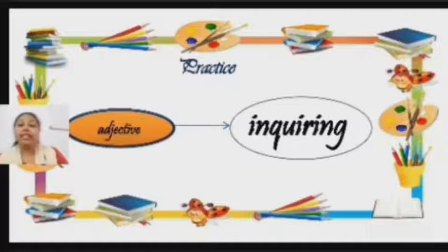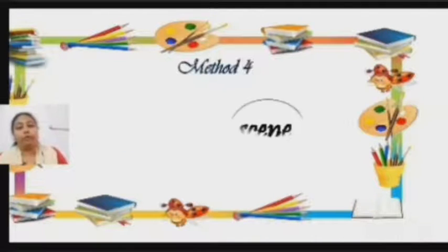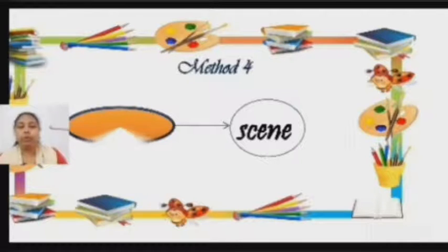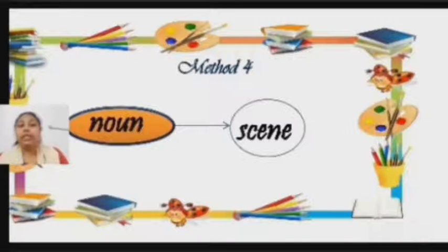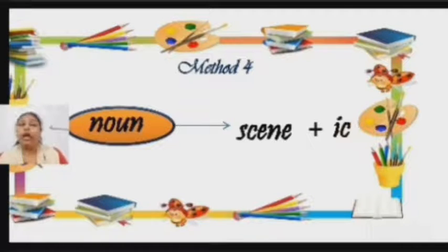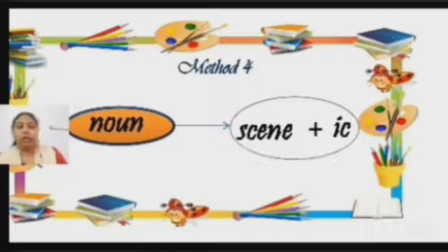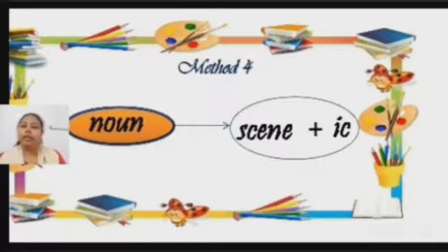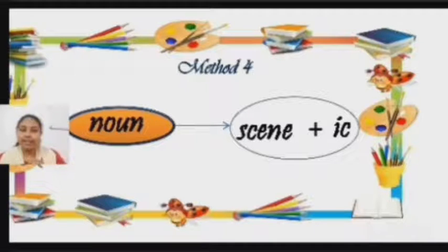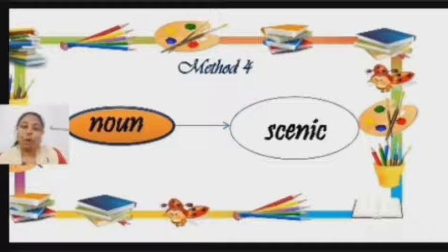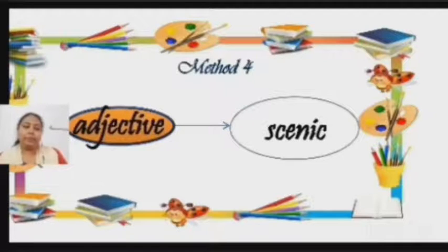So let's move and see the fourth method of changing a noun into an adjective. The word is 'scene'. I am going to add to this word '-ic'. You need to remember one more thing: whenever 'e' comes at the end of a word, 'e' is a very shy vowel — it hides. So the new word formed is written as S-C-E-N-I-C — 'scenic'.